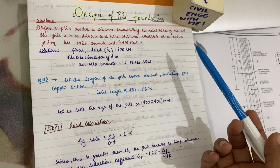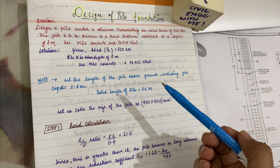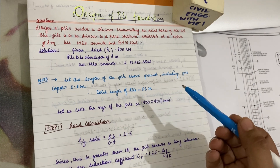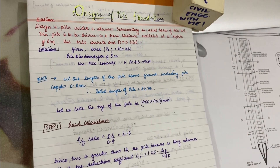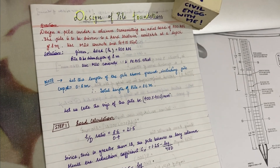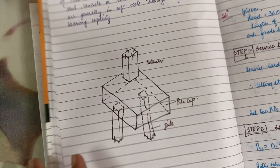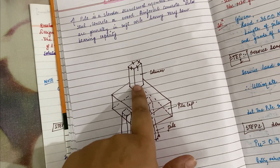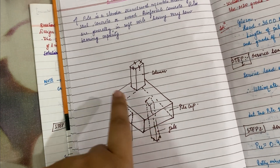We are given that the depth is 8 meters, so the length of the pile will be embedded into the ground. Let me show you a diagram so you can imagine a 3D view: there will be a column like this, and pile sections below it. The length given is 8 meters.